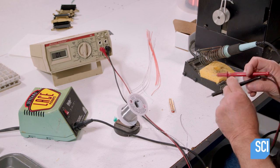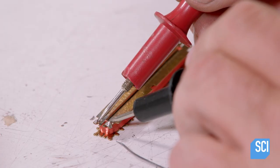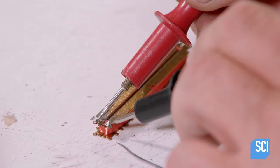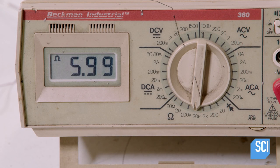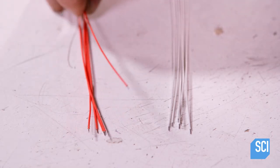He applies a direct current through the coil and gauges the electrical resistance. It falls within the acceptable range, so he solders connection cables to the windings.